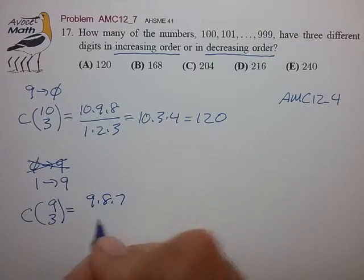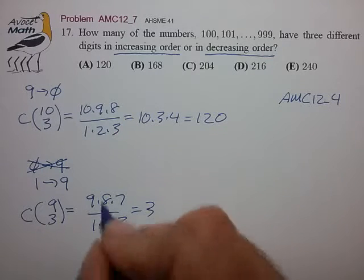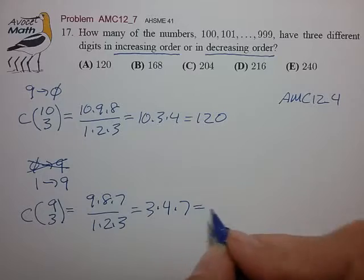And that works out pretty simply as C(9,3): 2 goes into the 8, 7, and that's 12 times 7, which is 84.